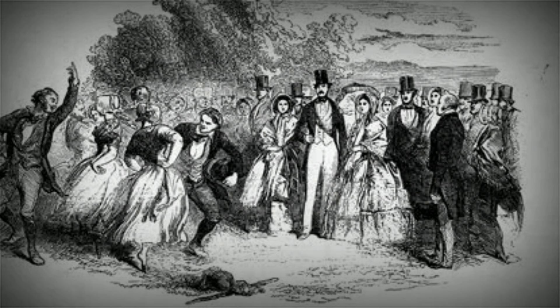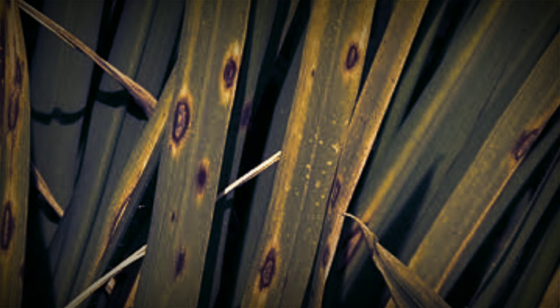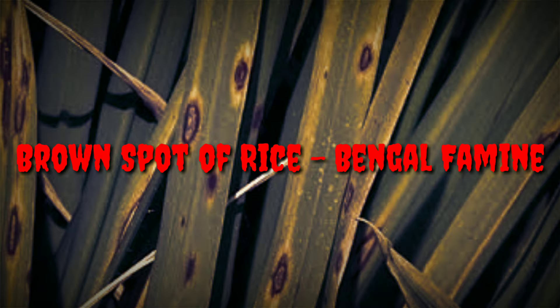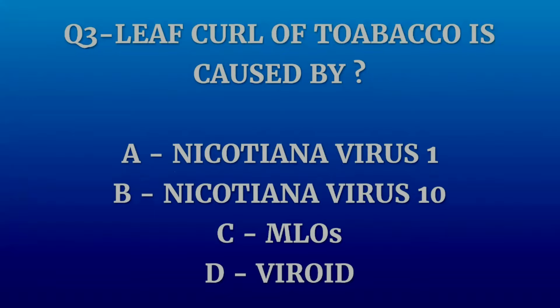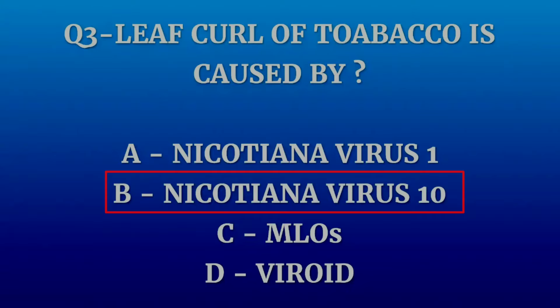Please note that late blight of potato was responsible for the Irish famine, whereas brown spot of rice was responsible for the Bengal famine. Question number three: leaf curl of tobacco is caused by which of the following? The options are Nicotiana virus 1, Nicotiana virus 10, MLOs, or viroid. The correct answer is Nicotiana virus 10.